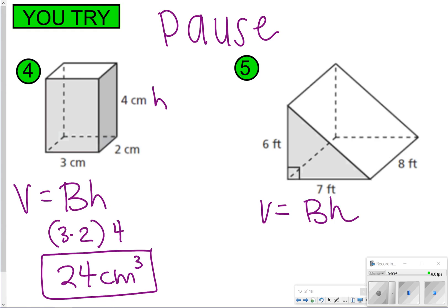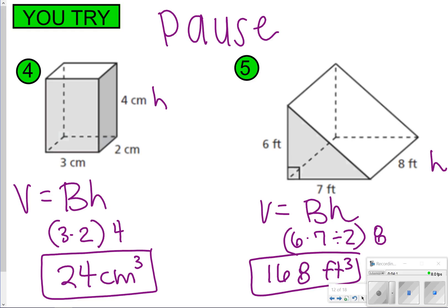For this one, it's a little bit different. I have a triangle as my base, so that's a 6 by 7 triangle, and then I've got to divide that by 2, and then multiply it by the height, which is 8. 6 times 7 is 42, 42 divided by 2 is 21, and 21 times 8 should give you 168 feet cubed. How'd you do in that one?